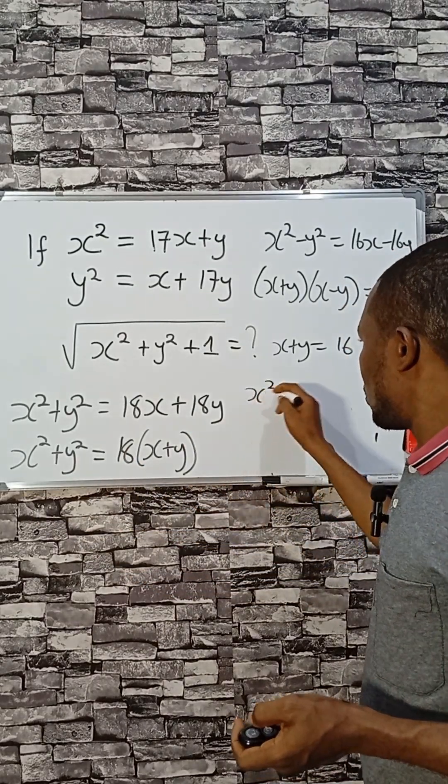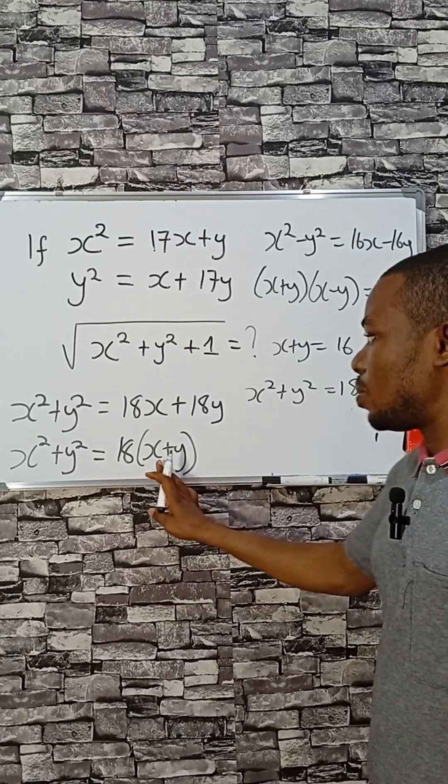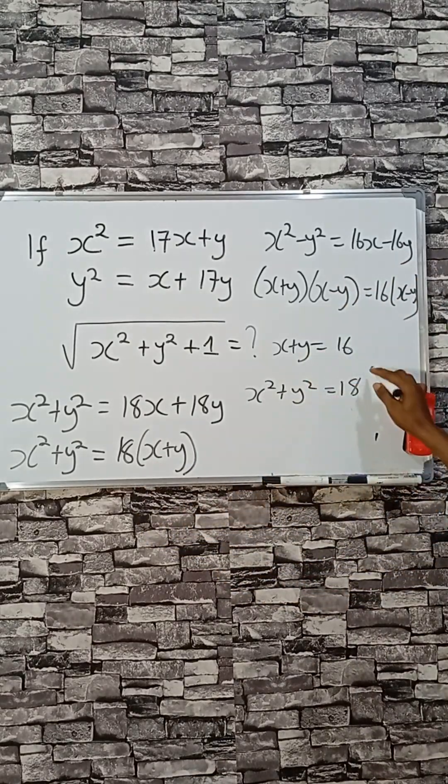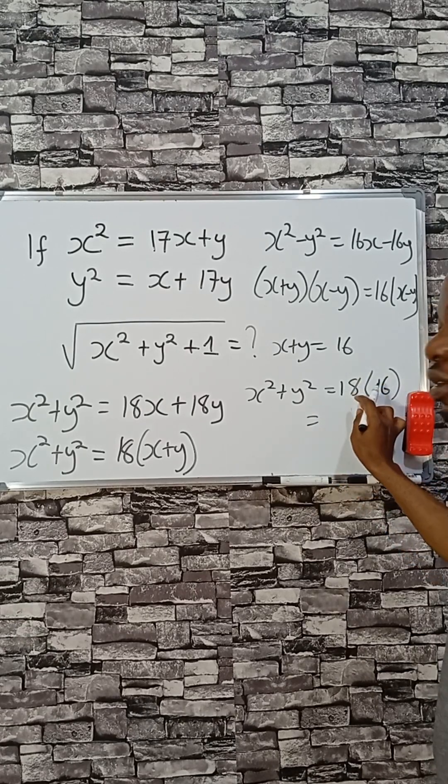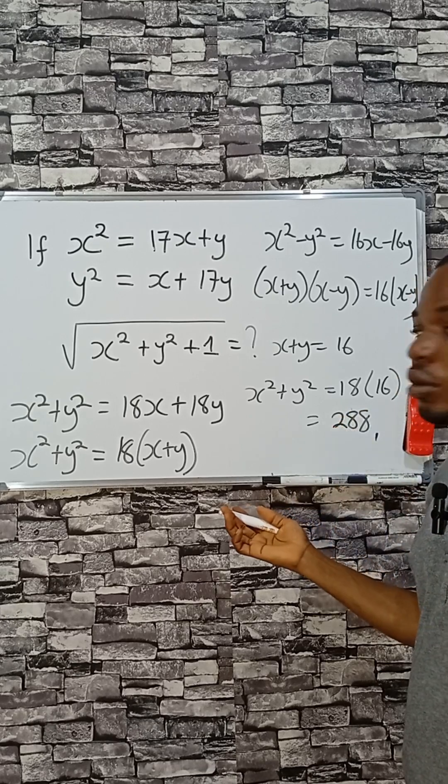We're told that x² plus y² equals 18 times (x+y). But we've gotten x+y from here, so we can replace it, which is 16. This will give us 288.